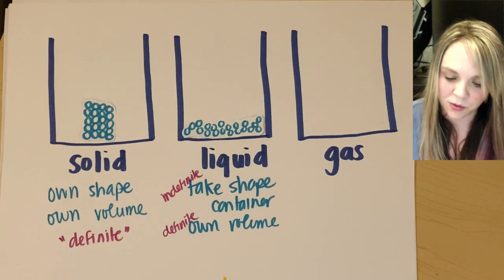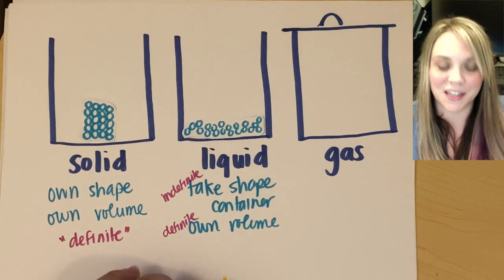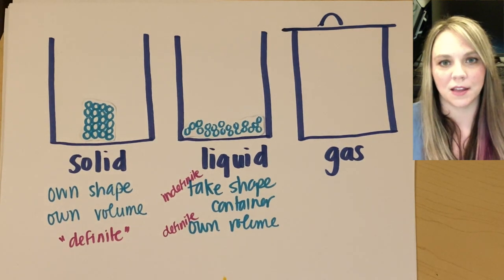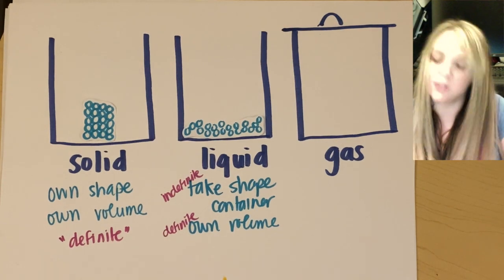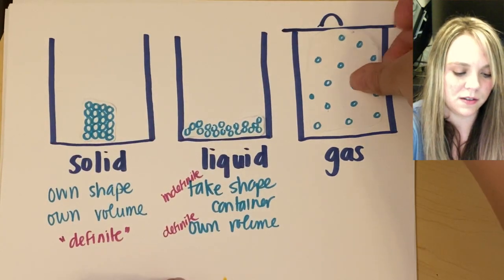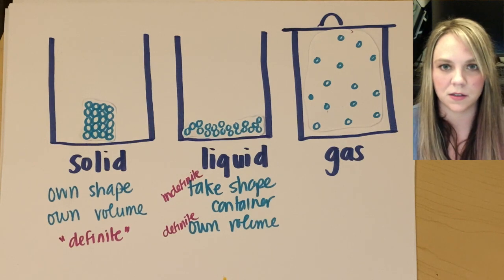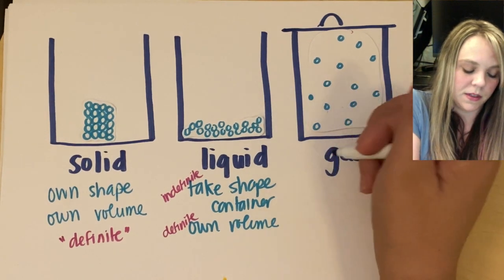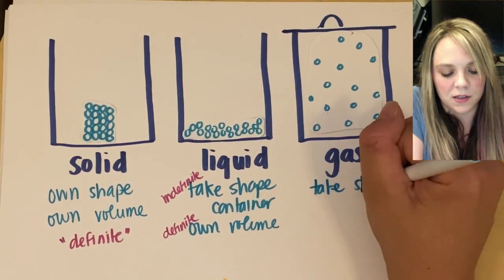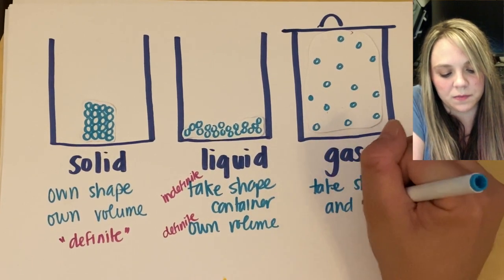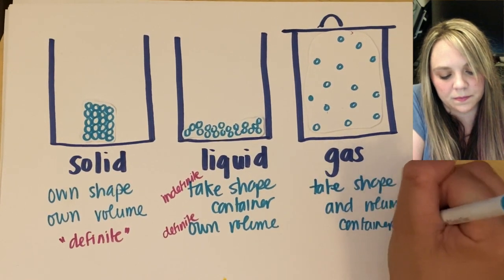A gas. In order to draw gas particles, you actually need to put a lid on your container. Because if not, the gas will just, you know, move throughout the room. All right. But if you wanted to put a gas into your container, it would spread out and take up the entire shape of the container. So a gas does not have its own shape and it does not have its own volume. So a gas will take the shape and volume of the container that they're in.